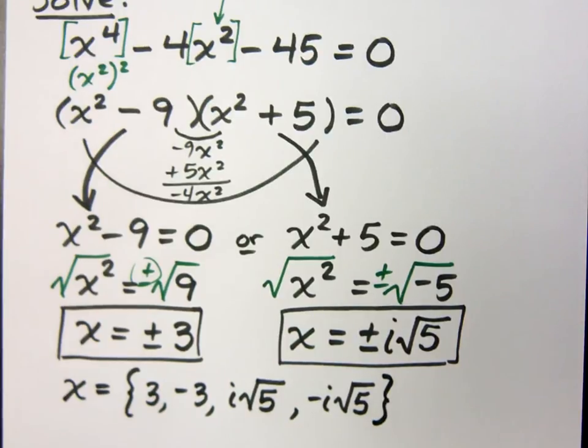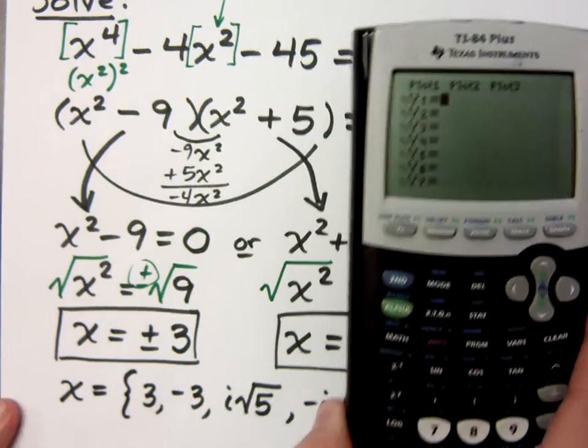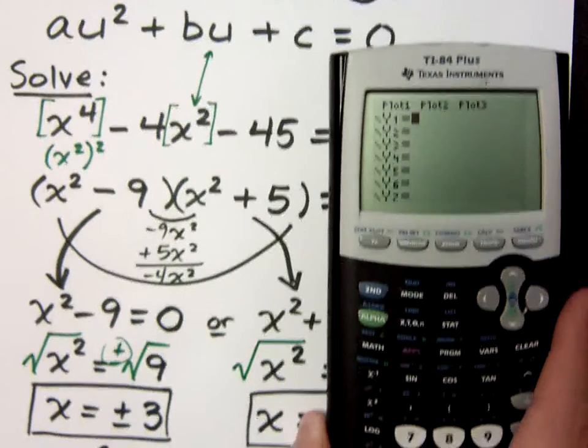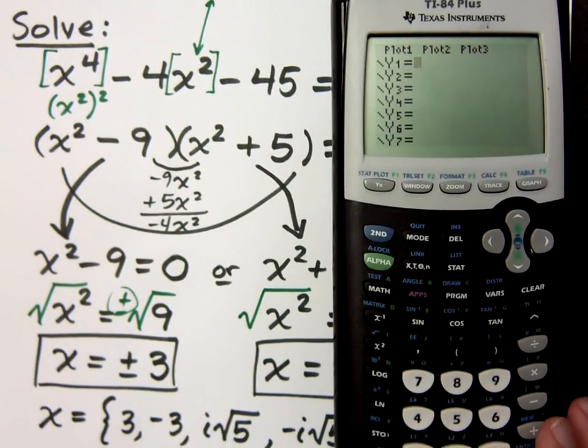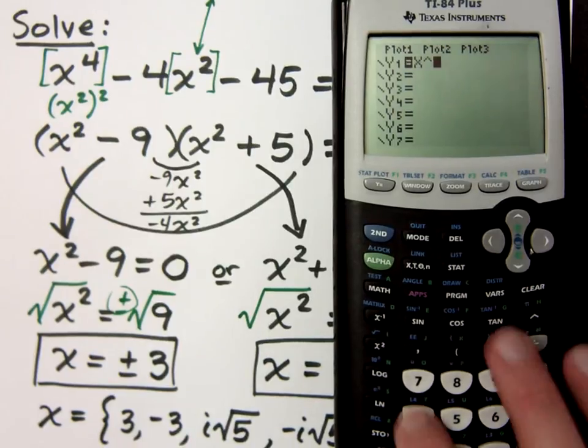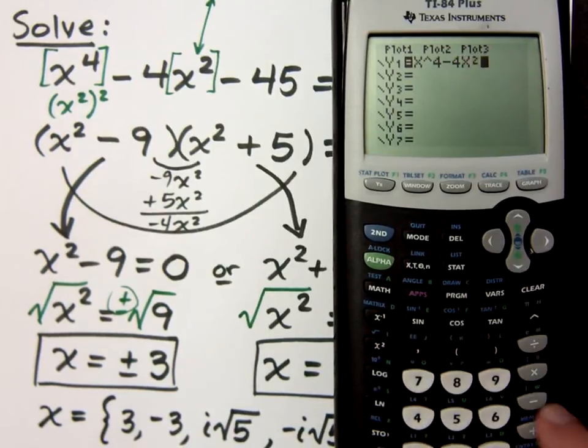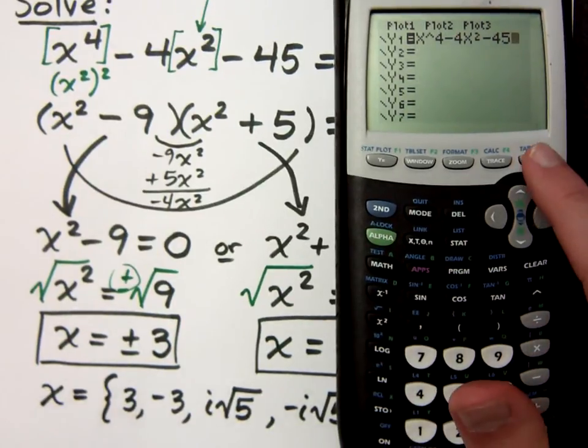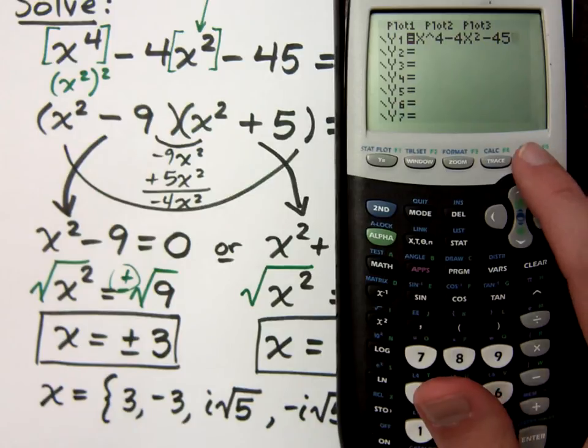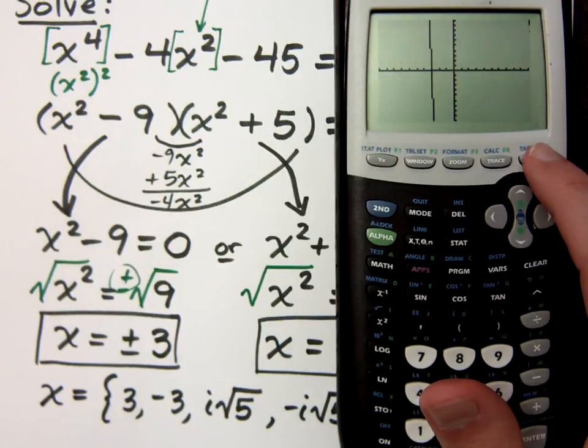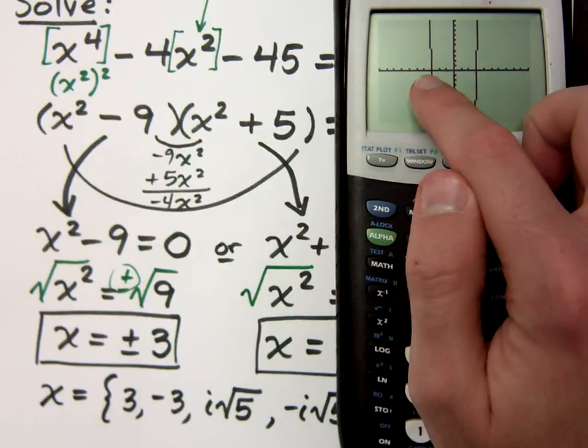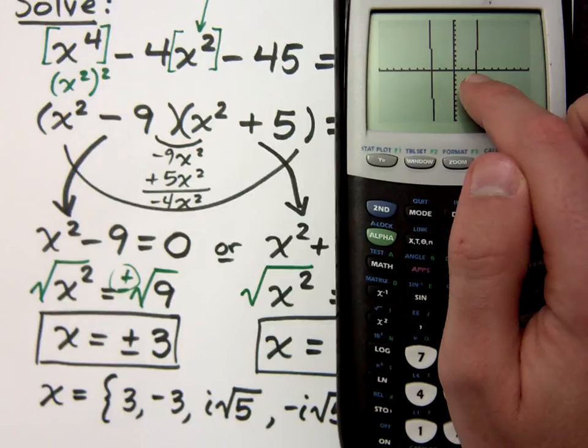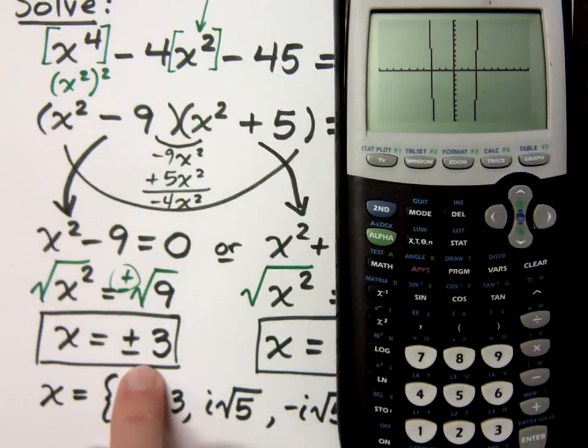Let's go to the graphing calculator so you can see what this guy looks like. If I type in x⁴ - 4x² - 45, when I graph this guy, I want to know where does this guy equal 0. That means where does it cross the x-axis. And you see that it crosses once and twice. And those values correspond to the -3 and the +3 that we found. Those are our only real solutions here, ±3.